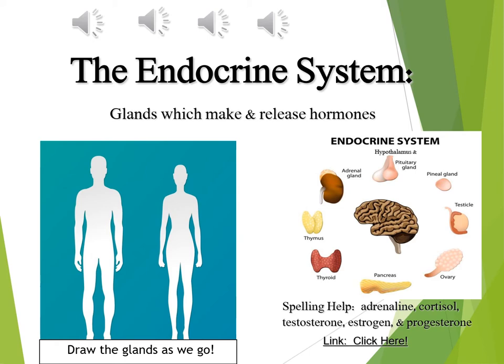Let's move on to the gland in the neck — the thyroid. We also have parathyroids there, but we won't cover those for this class. The thyroid looks like a butterfly or bow tie — and a great mnemonic: T is for thyroid, T is for throat. The job of the thyroid is to regulate metabolism. You may know someone who's hypothyroid or hyperthyroid, which has a profound effect on their metabolism.